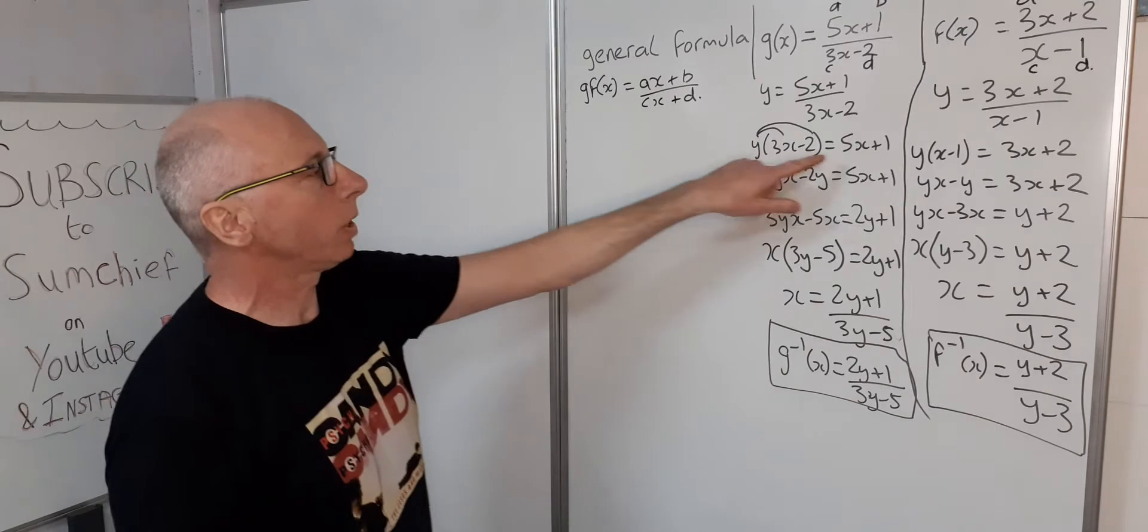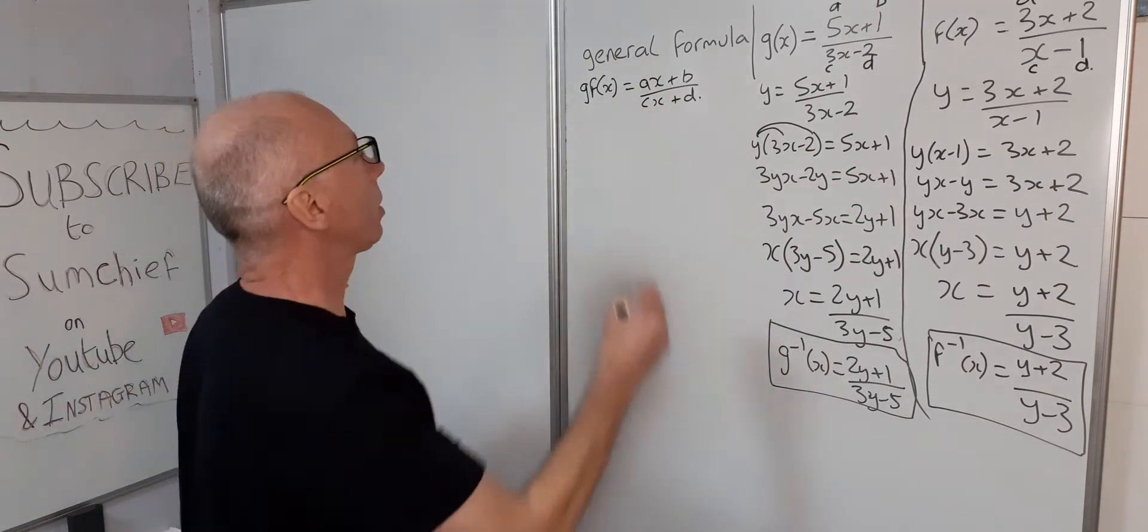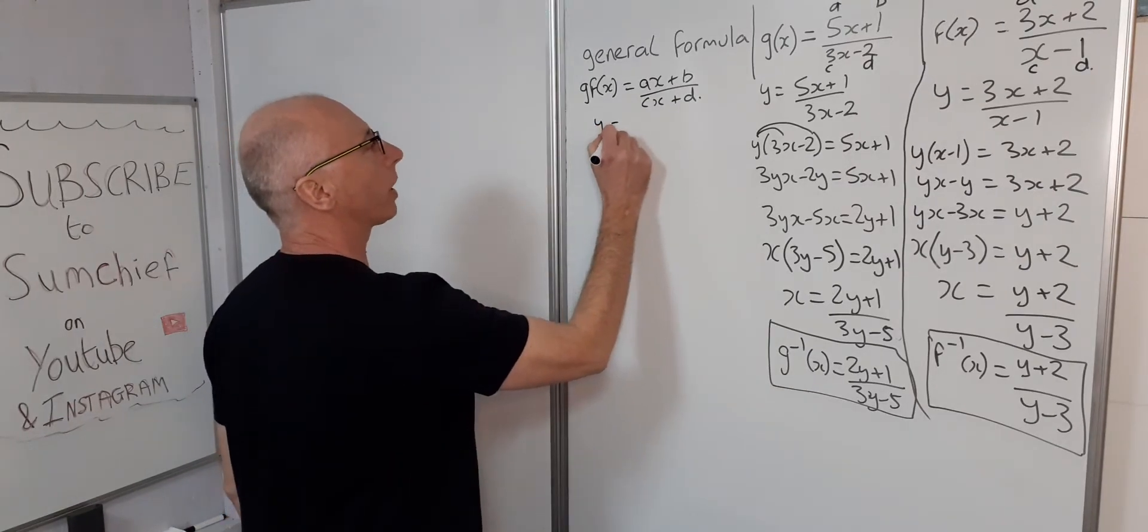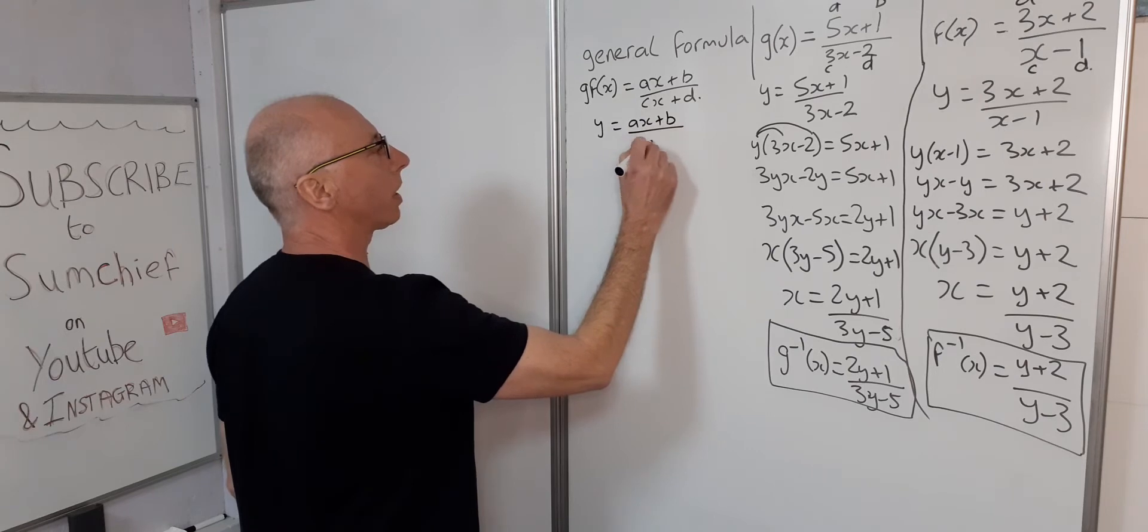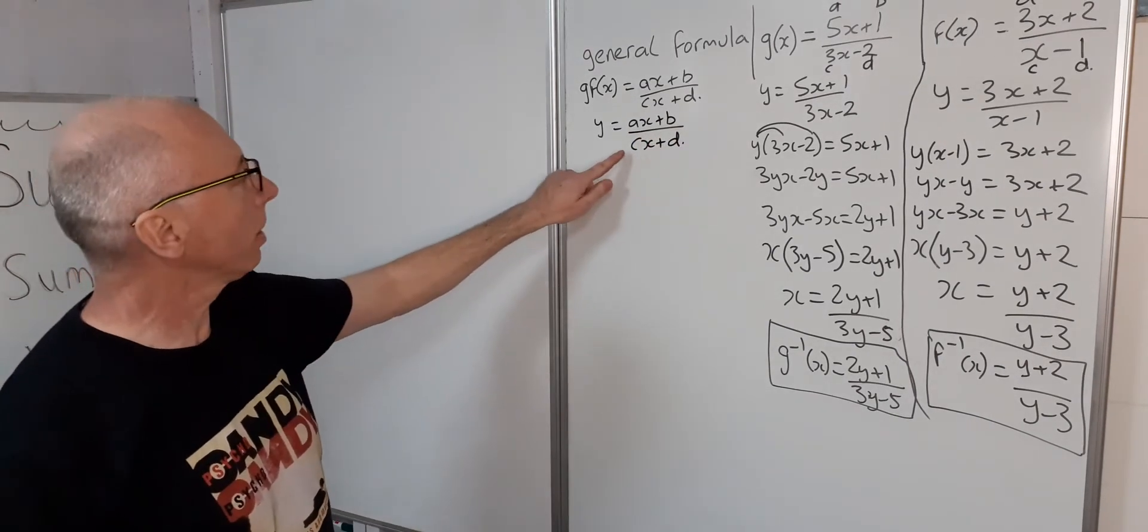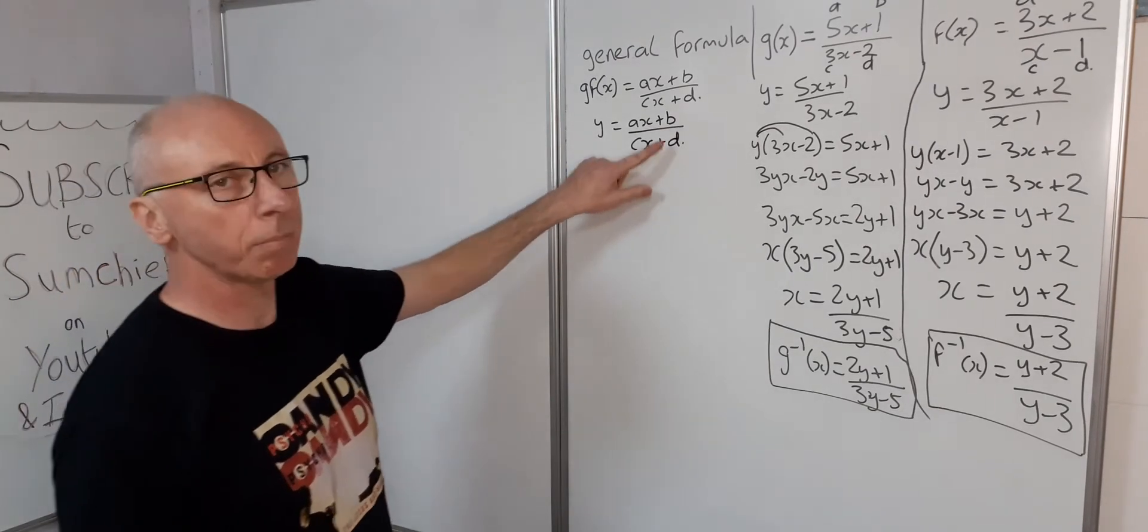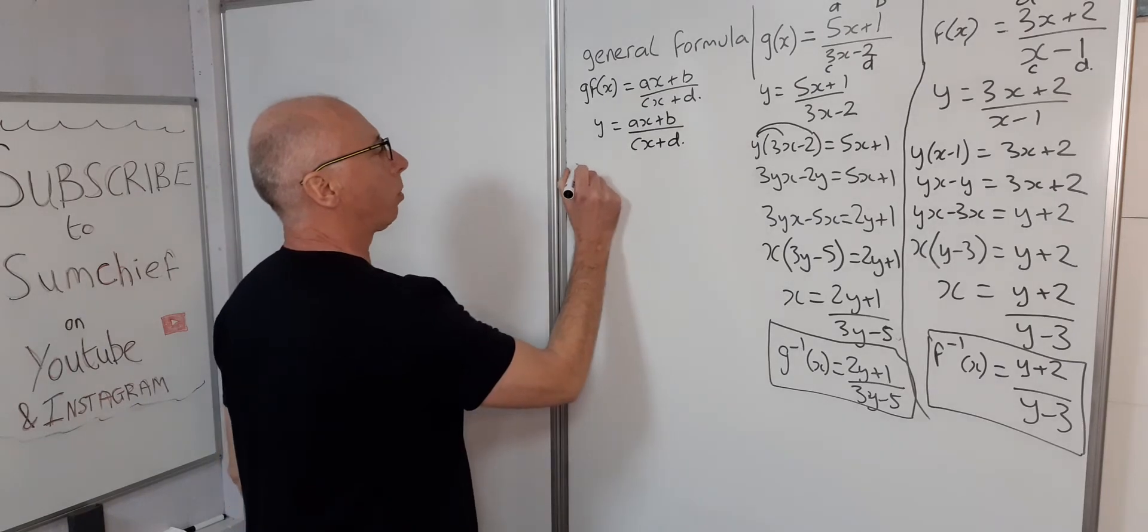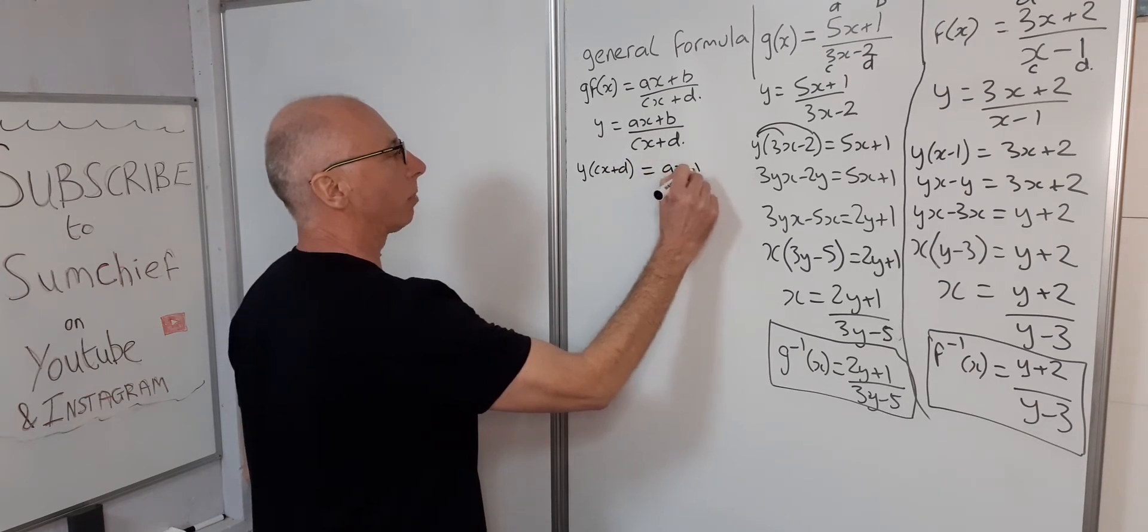Now, again, as we did with all these, we'll solve and get x on its own. So first of all, put a y in, so y equals ax plus b over cx plus d. Our usual business. Let's get cx plus d over this side, so that means we have to multiply both sides by cx plus d. So y times cx plus d equals ax plus b.